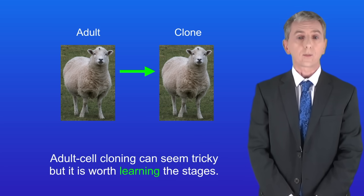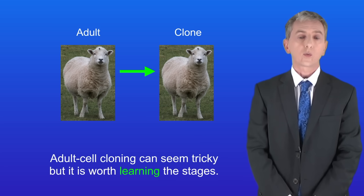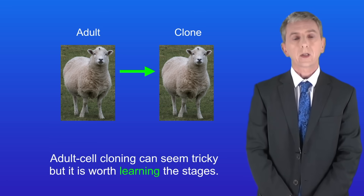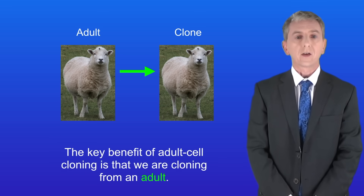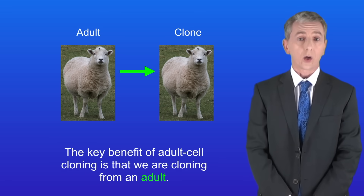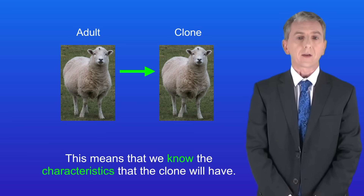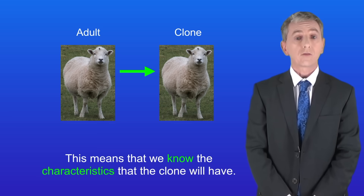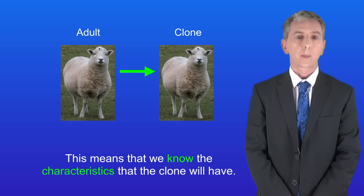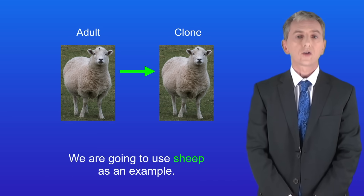Adult cell cloning can seem tricky but it's worth learning the stages. The key benefit of adult cell cloning is that we're cloning from an adult, which means that we know the characteristics that the clone will have. We're going to use sheep as an example.